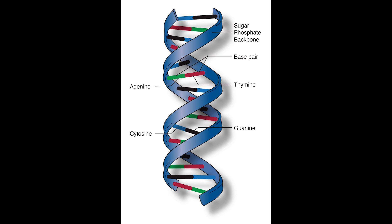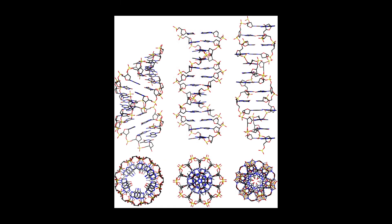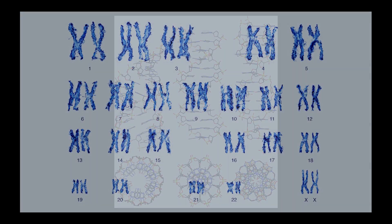These nucleotides are paired together and form, along with the phosphate and sugar, a double helix structure as seen in this picture. Now, there are many types of DNA, but we're not particularly concerned about the various types of DNA today. Today, we're going to be focusing primarily on chromosomes.